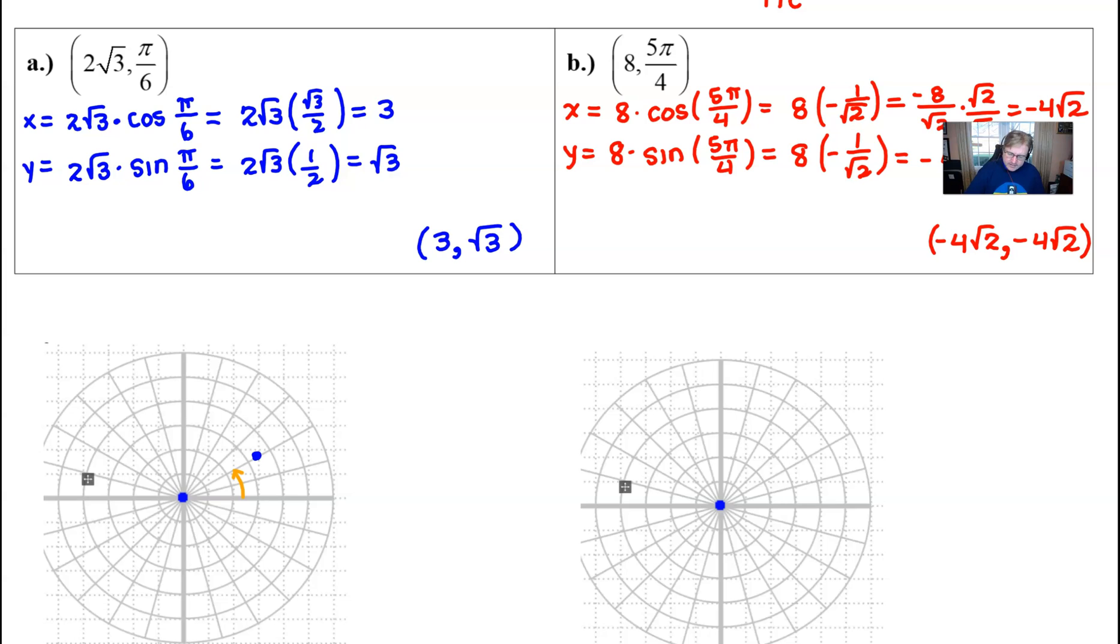Well if we were to take a look at our rectangular point which is 3, √3 I know that √3 is pretty close to 1.7 so let's see what I've got here. 1, 2, 3 and up 1 and 0.7 I would say that the location of that point is pretty darn close.